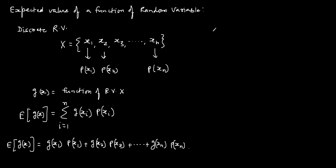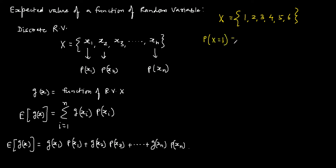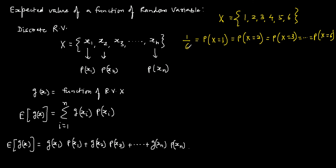Now let's take an example of a discrete random variable. X is a discrete random variable and suppose it has six values: 1, 2, 3, 4, 5, and 6, and these values are equiprobable. So the probability that x equals 1 is equal to the probability that x equals 2, and so on. Since all values are equiprobable, the probability of each value is 1/6, because there are 6 values in total and the sum of all probabilities must be 1.